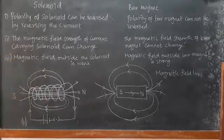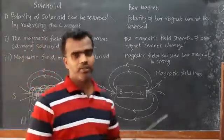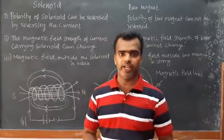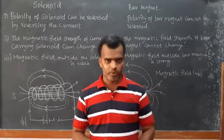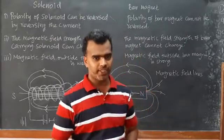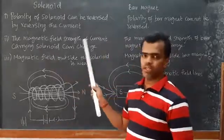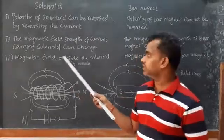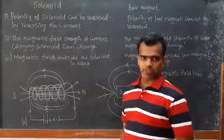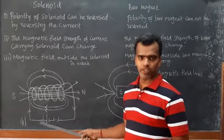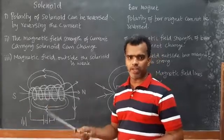The second point is that the magnetic field strength of a current-carrying solenoid can be changed. If the current is changed — for example, 1 ampere will correspond to one magnetic field strength, and 2 amperes will correspond to a different magnetic field strength — so the magnetic field varies with current.